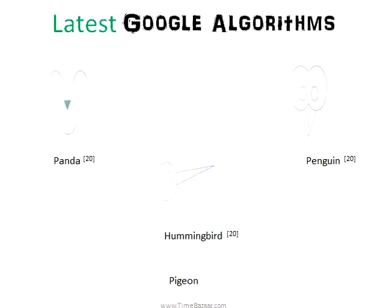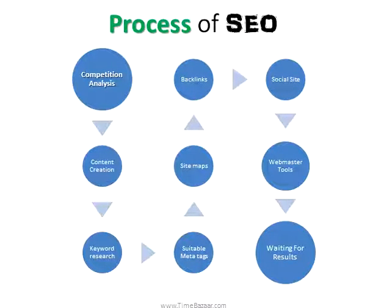Blended results are those which show images, videos, and maps. If we talk about Google, these are the algorithms Google uses to show results on the search engine results page: Panda, Penguin, Hummingbird, and Pigeon. Recently, Pigeon and Penguin have come into play.